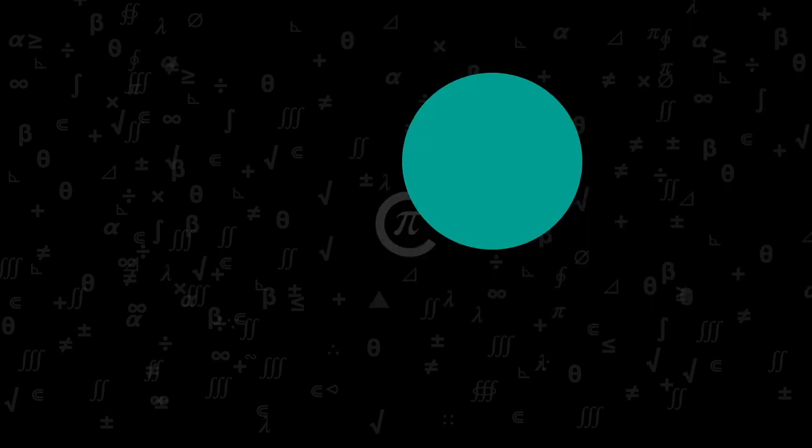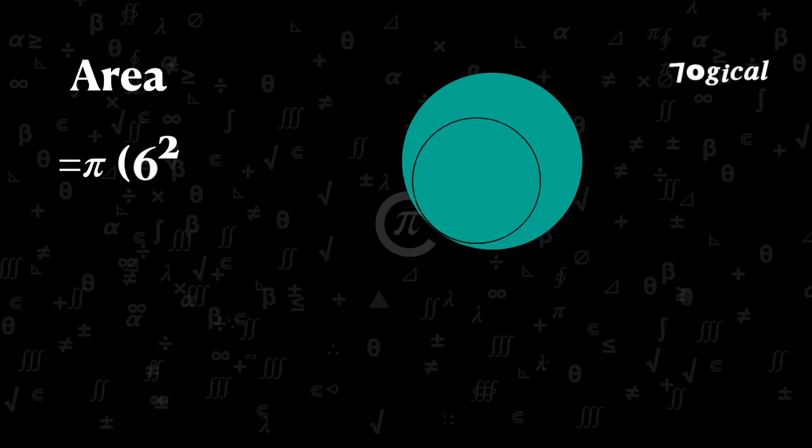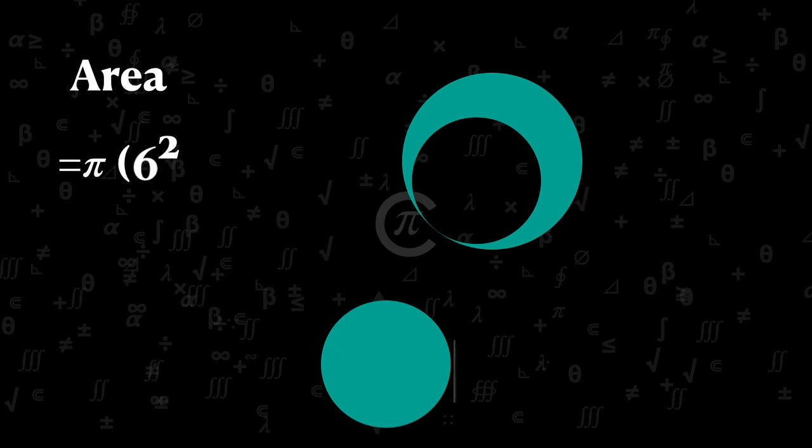This is a bigger circle, has a radius of 6 unit. Then shaded area equals pi into 6 square. Now remove this portion from the circle and this portion is also another circle, has a radius of 4 unit. Now subtract area of the circle from the shaded area. Then area becomes pi into 6 square minus 4 square.